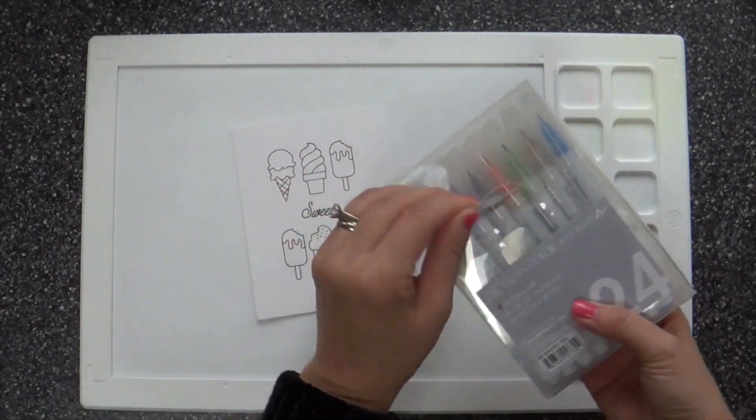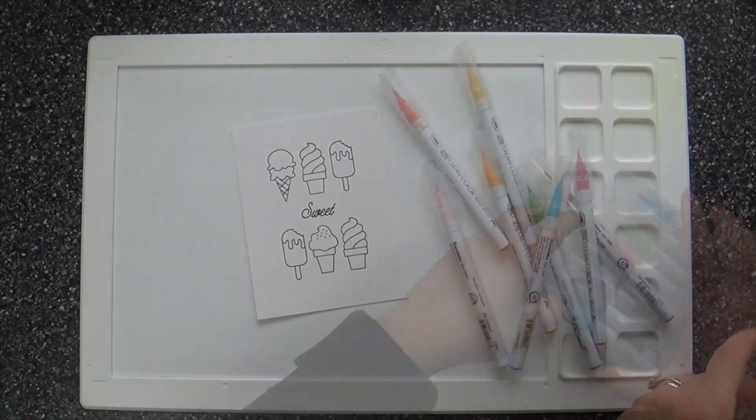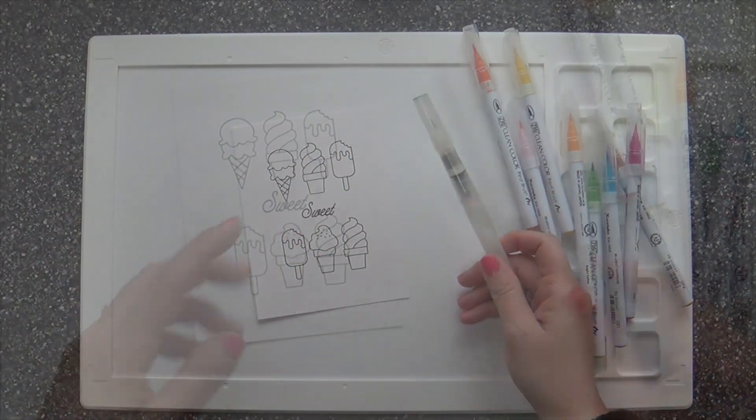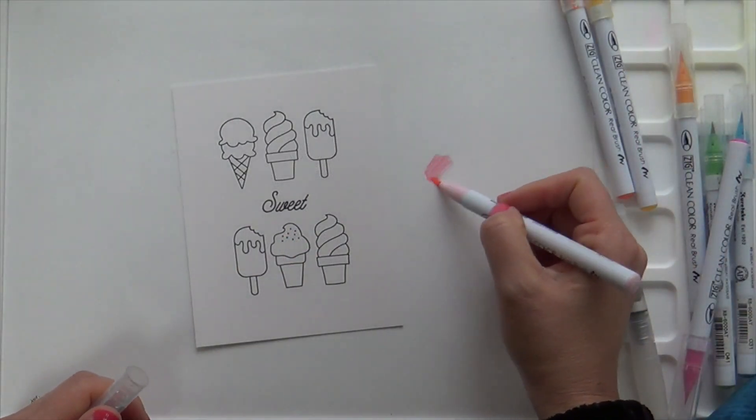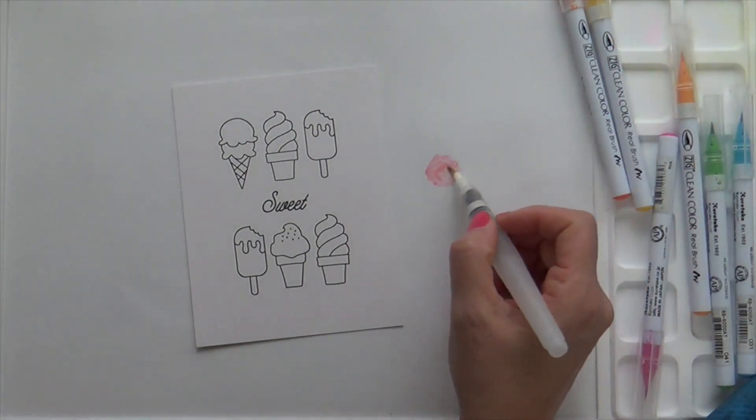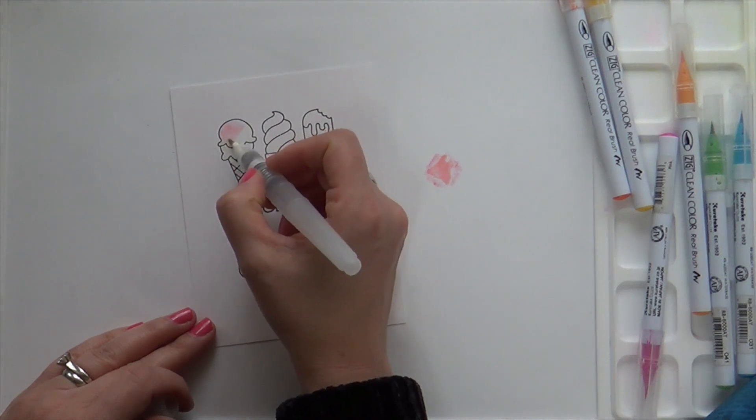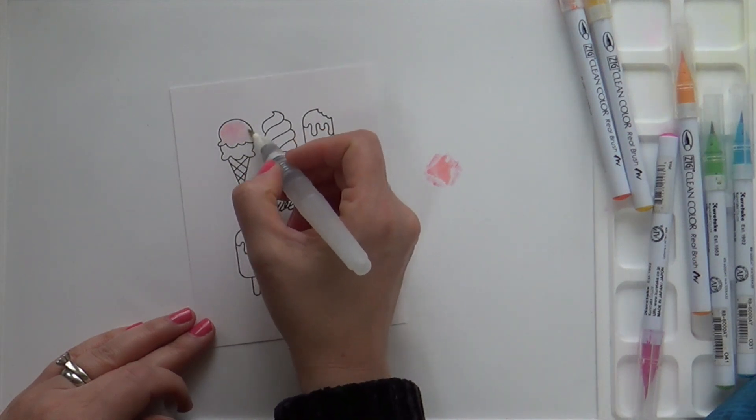So I'm going to be coloring my image using Zig Clean Color markers—I call them zig-a-zig-a-ziggies—using a few of my favorite sherbety ice creamy colors and a water brush. Just a simple little, I think it's a Tim Holtz water brush.